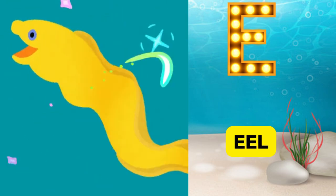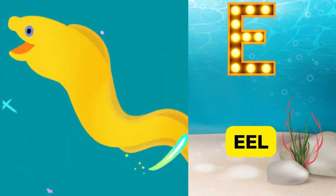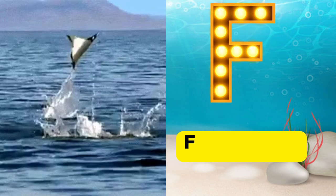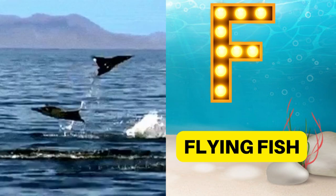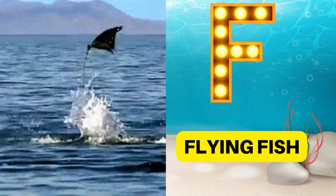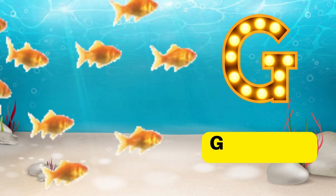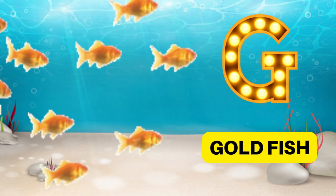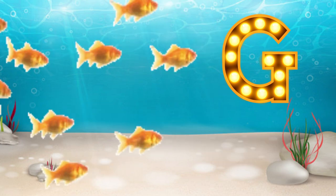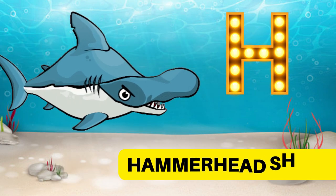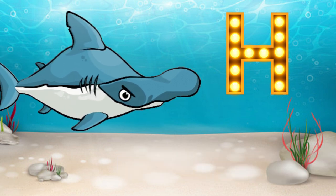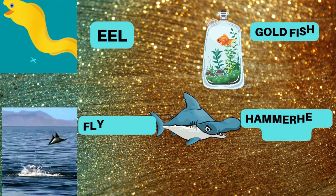E is for eel, eh eh eel. F is for flying fish, fuh fuh flying fish. G is for goldfish, guh guh goldfish. H is for hammerhead shark, ha ha hammerhead shark.